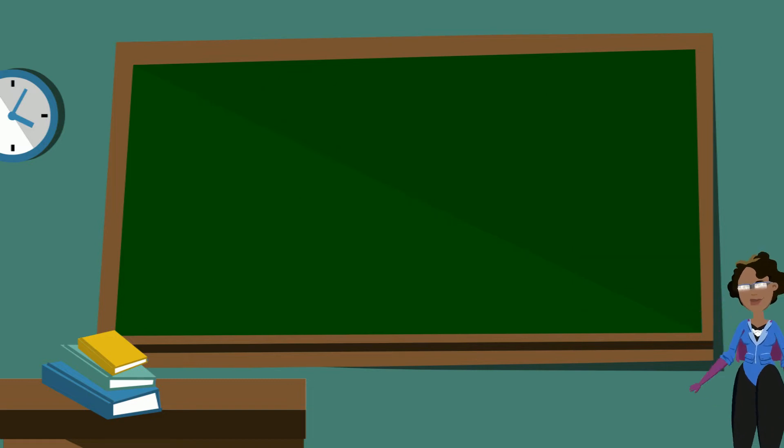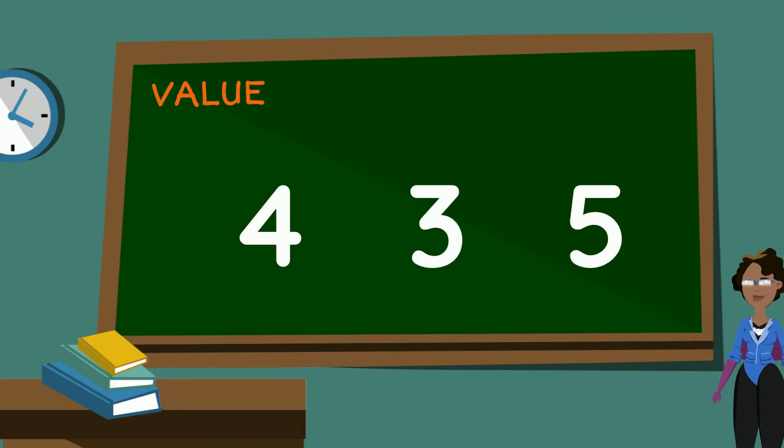Now that that's out of the way, let's look at the value of the digits in the first number we just saw. In the number 435, the value of the digit 4 is actually 400 because it's in the hundreds column. 3 is valued at 30 because the 3 was in the tens column, and the 5, which was in the ones column, is valued as 5.